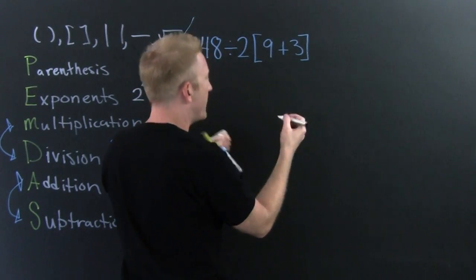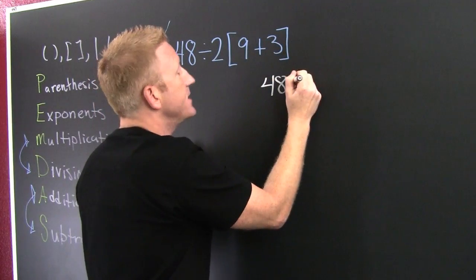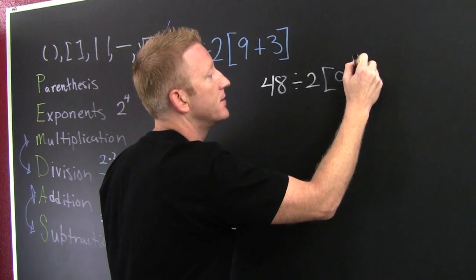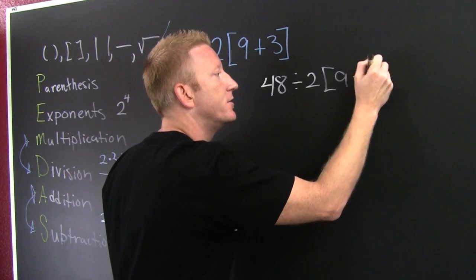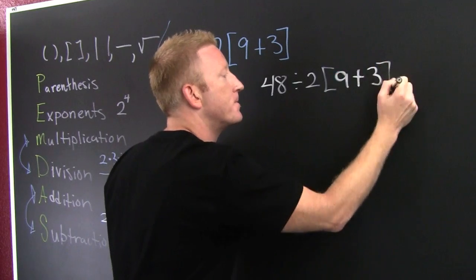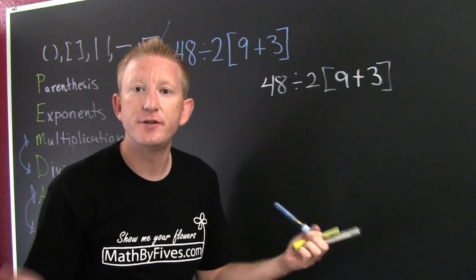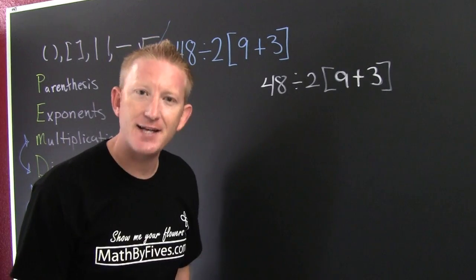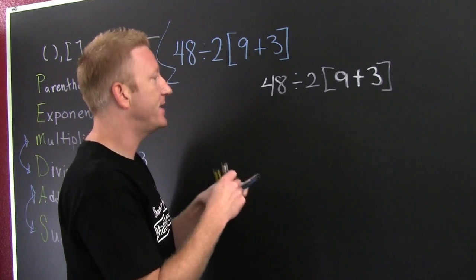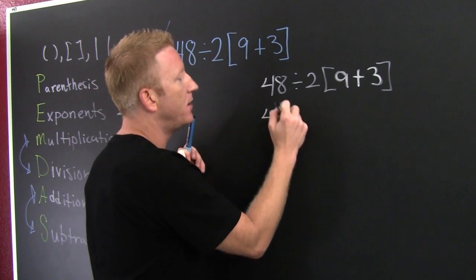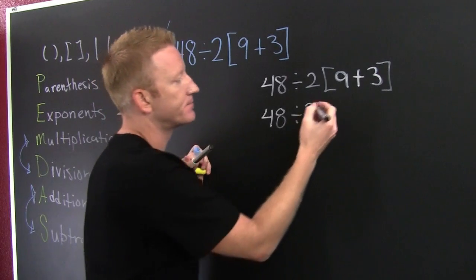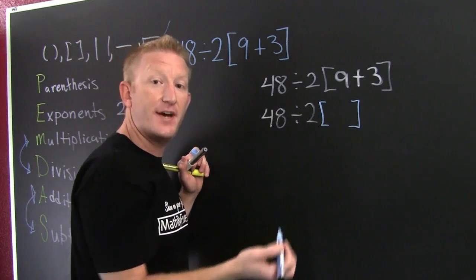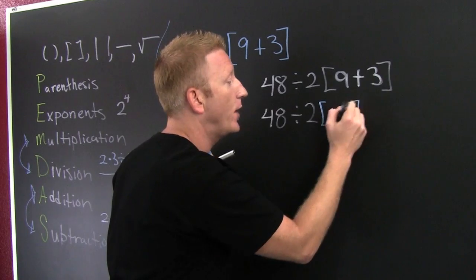The problem is 48 divided by 2 times the quantity (9 + 3). What do we need to do first? Parentheses first — that's our P, the grouping symbols. Do you see any parentheses? Yes: nine plus three. So we handle that; everything else, don't touch it. That gives us 12.